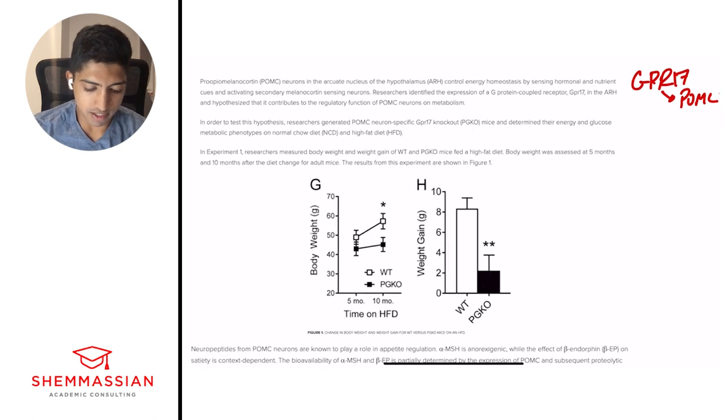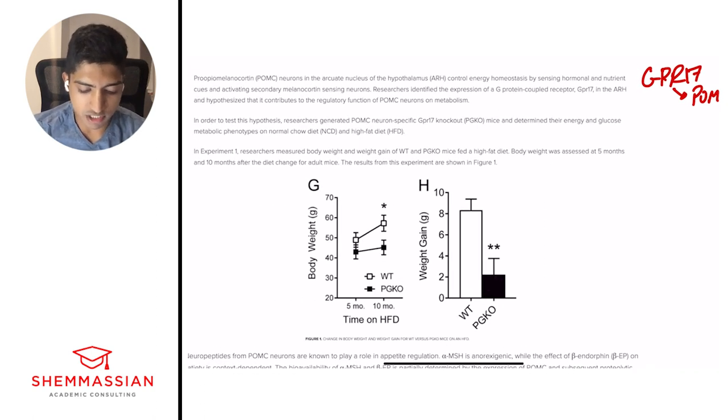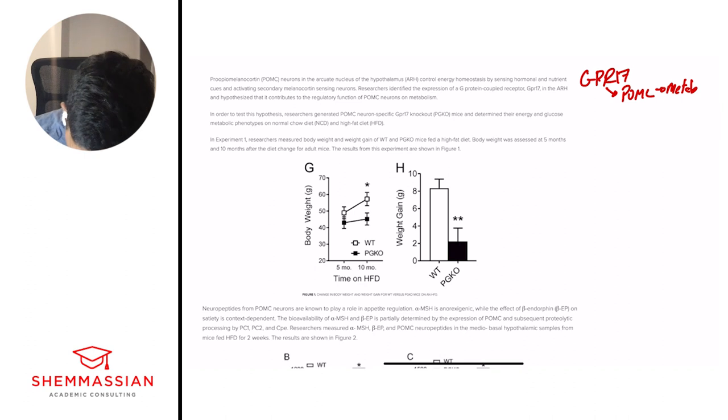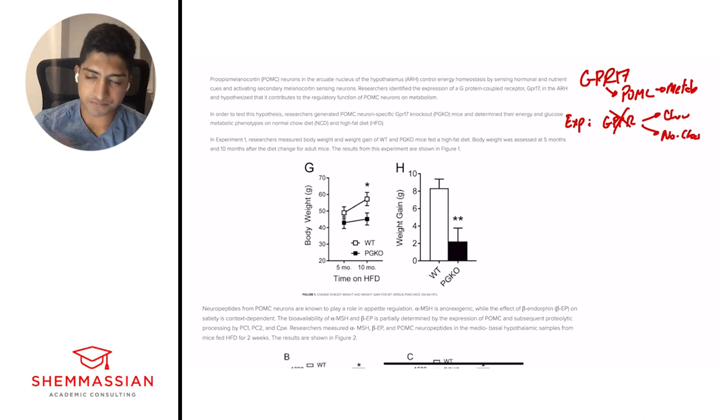Let's go on to the next paragraph. In order to test this hypothesis, researchers generated POMC neuron-specific GPR17 knockout, PGKO mice, and determined their energy and glucose metabolic phenotypes on normal chow diet and high fat diet. Again, what's happening? So here we have an experiment. And what's the experiment? GPCR knockout, so I'm just putting X, and then chow, no chow, or high fat. Whatever works for you. Big picture idea, symbols, whatever you need.